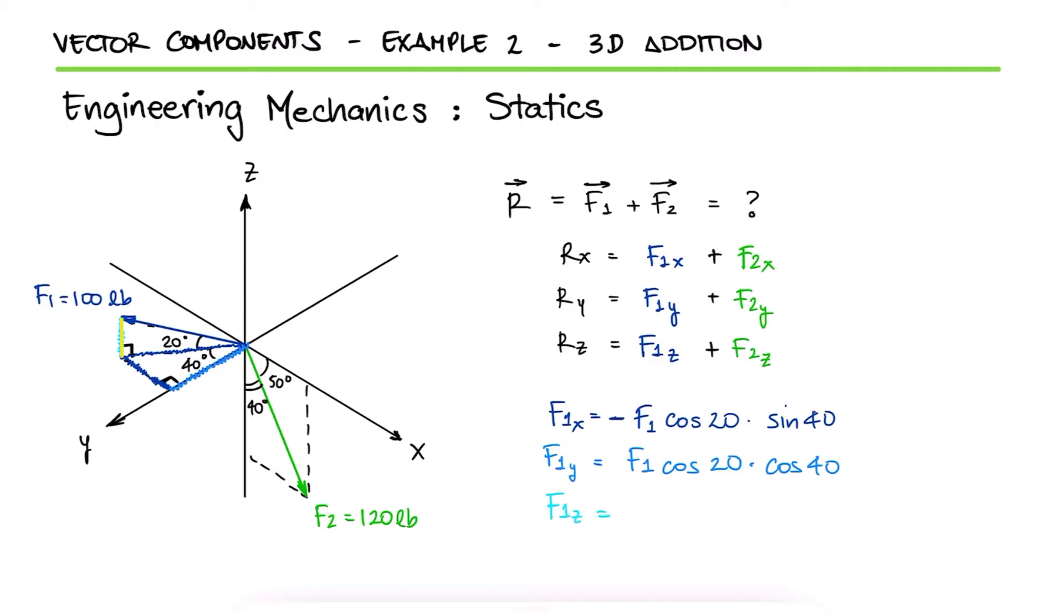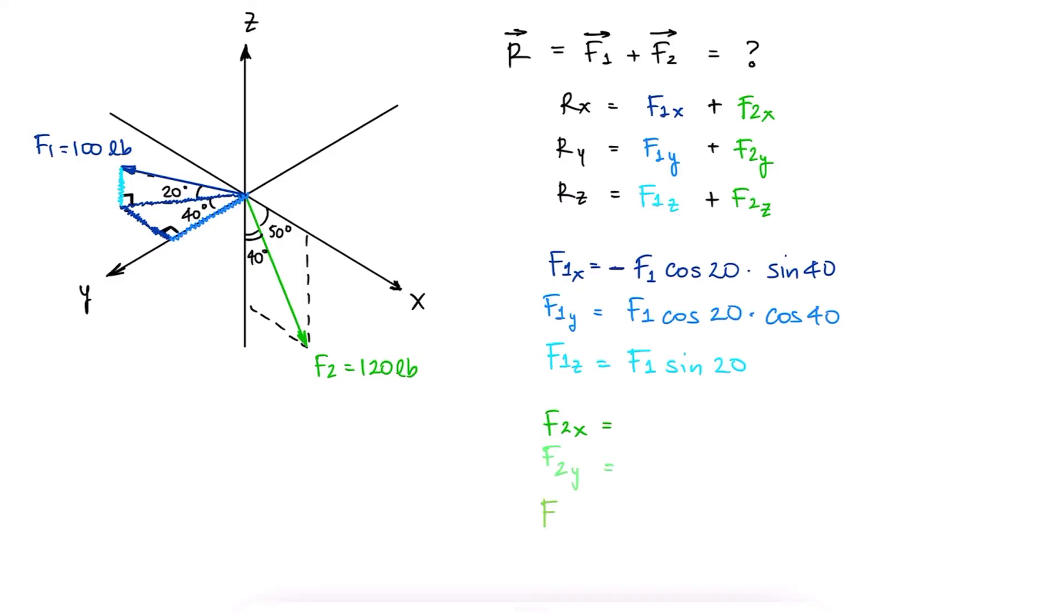Finally, the z component is the opposite side of the 20-degree angle. For force F2, we see that it is located on the vertical plane x, z, and therefore the y component is 0.